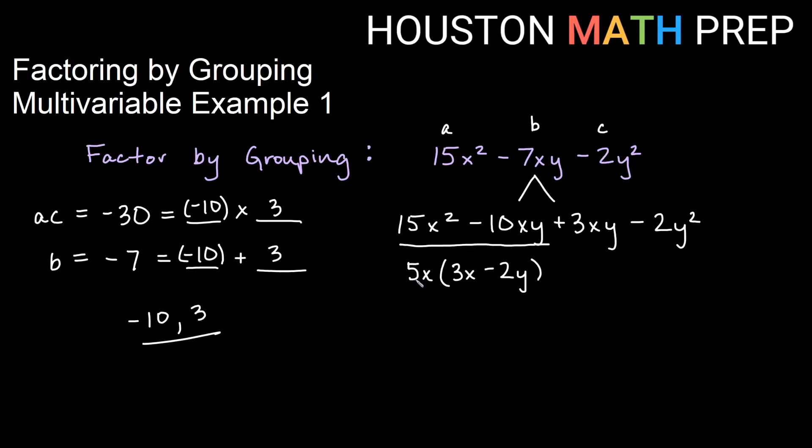Remember, when I distribute 5x, 5x times what gives me the first term? 5x times what gives me the second term? That's how I decide. I'm already saying that 3x minus 2y is going to be a factor. So I write down 3x minus 2y, and I ask myself, what times this 3x minus 2y will give me the second half?